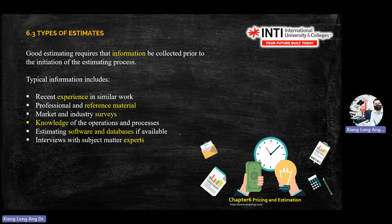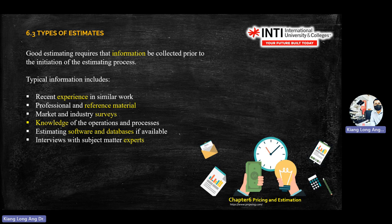How do you do estimates? As an engineer or project manager, you estimate based on data. These are the typical sources for your estimation: experience, reference materials such as standards, journals, papers, and company IP; market and industry surveys; knowledge from the factory floor or R&D department; software or company databases; and consulting with experts. So these are the sources where you can do estimates based on experience, reference material, survey, knowledge, software or database, and expert.